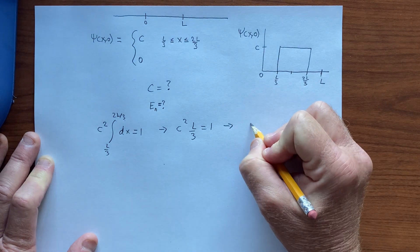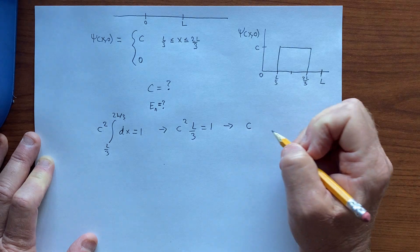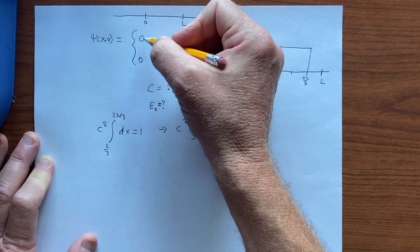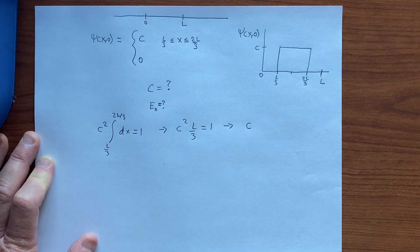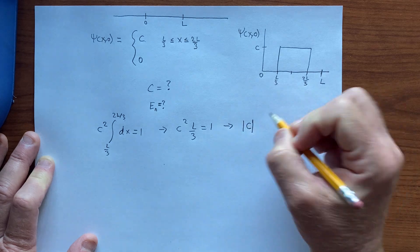So what follows from that is that c, the magnitude of c, we'll just assume a positive number. Anyway, the magnitude of c, we solve for this.